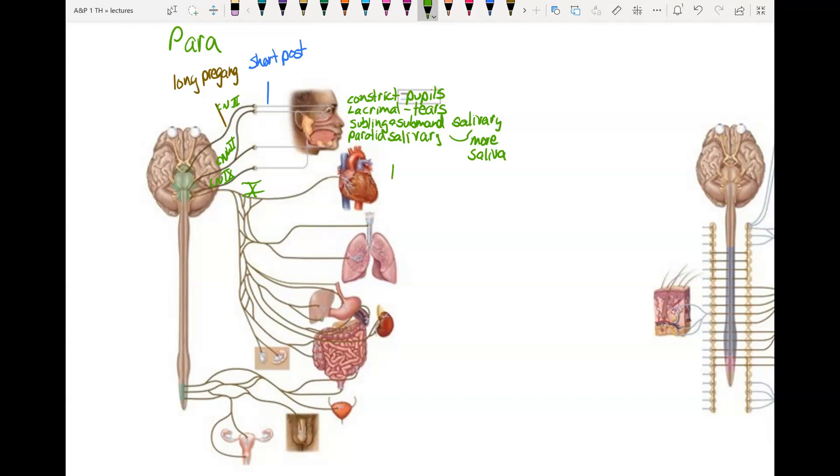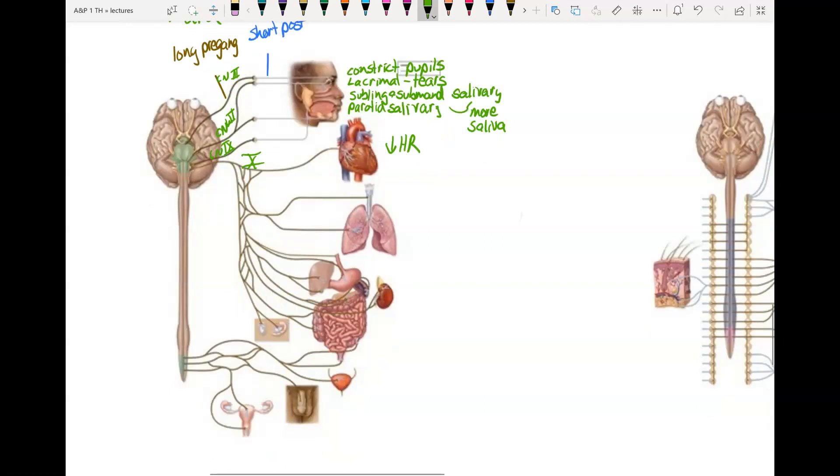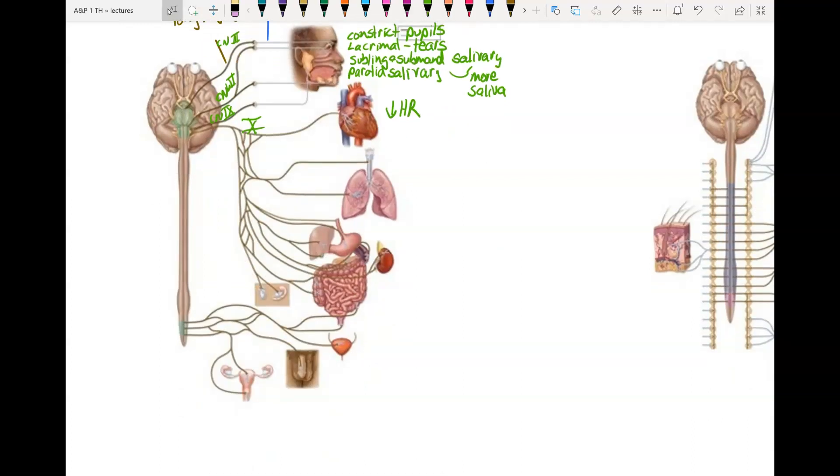It goes to the heart and it decreases heart rate. So the vagus causes the heart to slow down. It goes to the respiratory system and it causes bronchoconstriction, so it's going to make your airways narrow so that you get less air in and out with each breath.